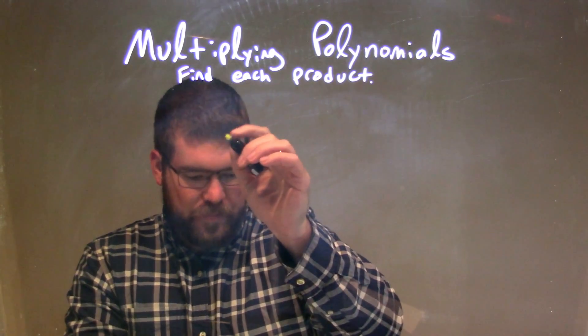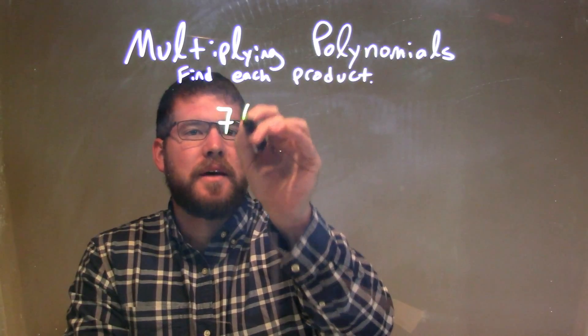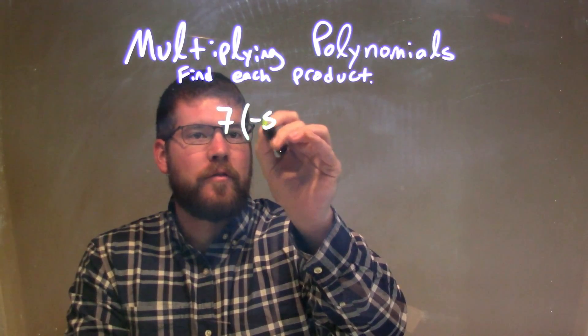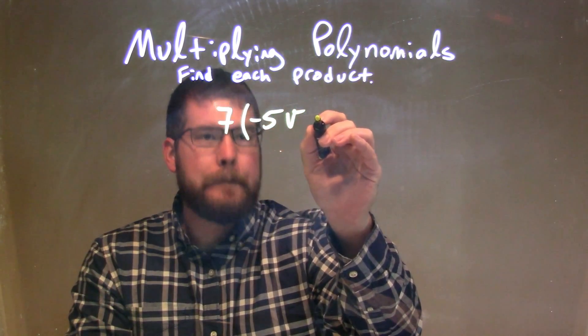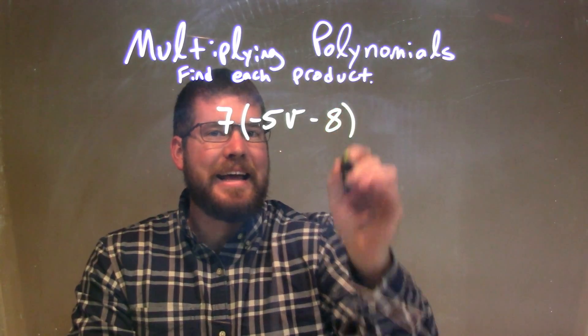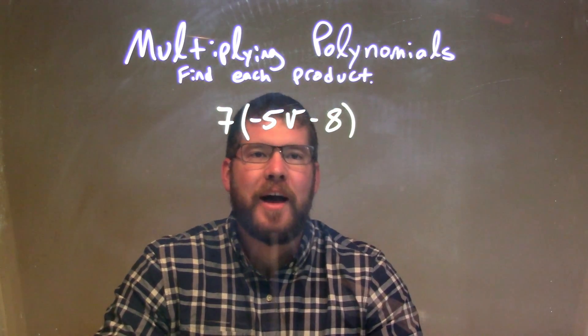So if I was given this polynomial here: 7 times negative 5v minus 8.